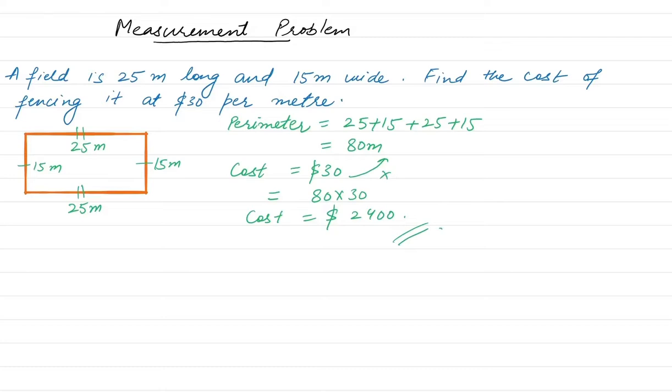Now let's do one more problem. Find the perimeter of a square whose area is 144 centimeters square.